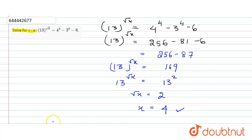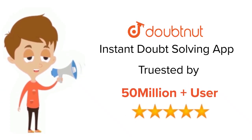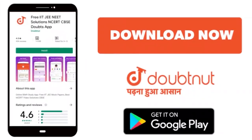So squaring, we'll get x equals 4 is the answer. Thank you. For class 6 to 12, IIT-JEE and NEET level, trusted by more than 5 crore students. Download Doubtnut app today.